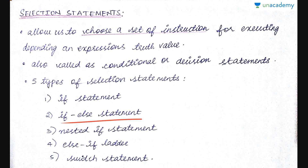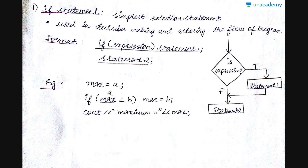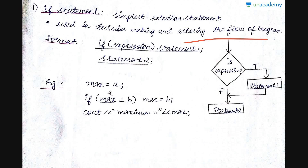The if statement is the simplest selection statement. It is used in decision making and altering the flow of the program. The syntax is: if followed by the expression within parentheses, followed by statement one. If the expression is true, statement one gets executed. Regardless of whether it is true or not, statement two gets executed after.